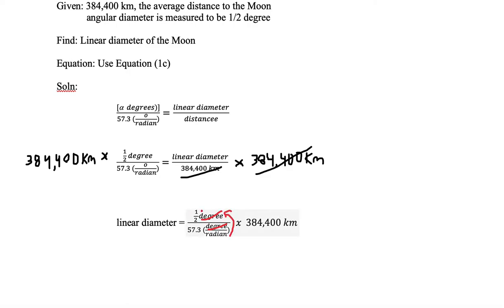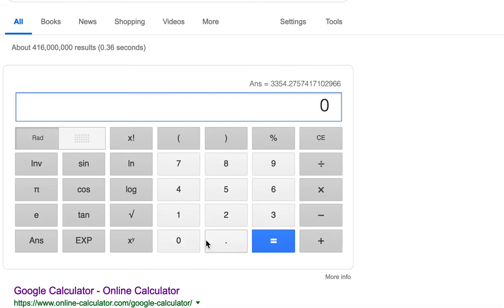We need to divide half by 57.3. Let's go to Google calculator. We put in 0.5 and divide by 57.3 and we get an answer of 0.008726.